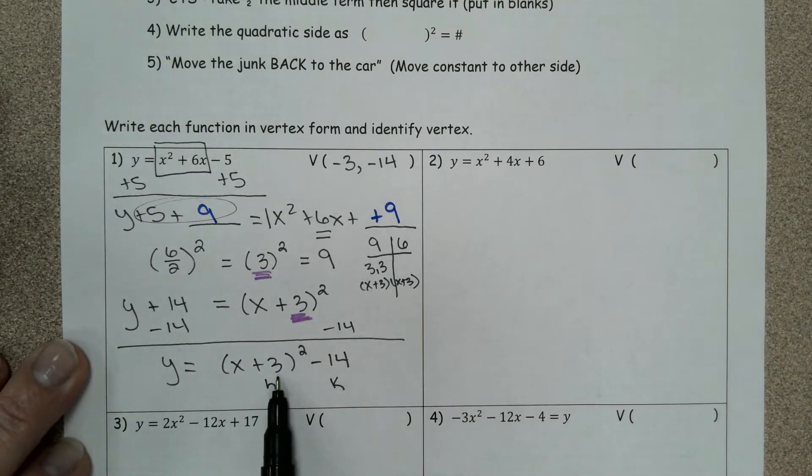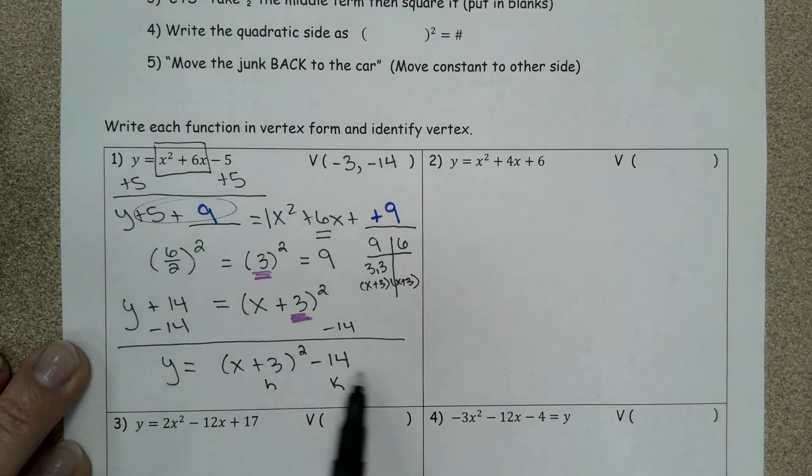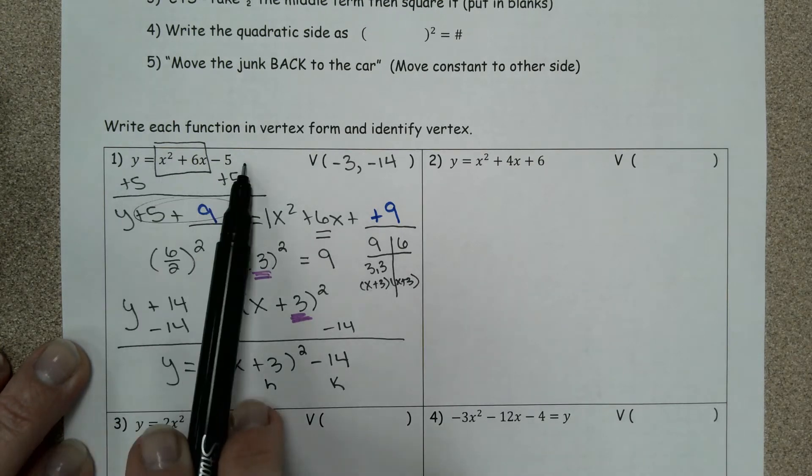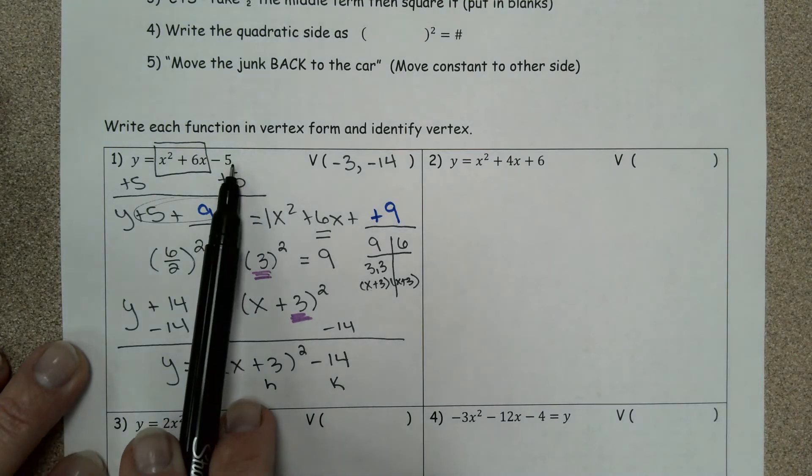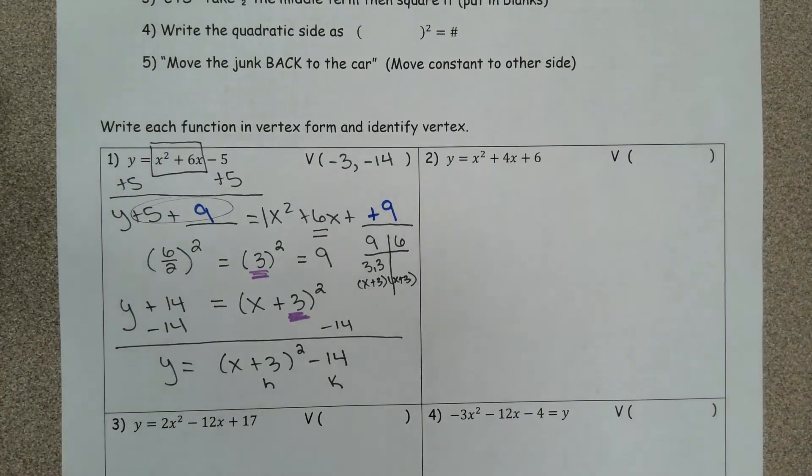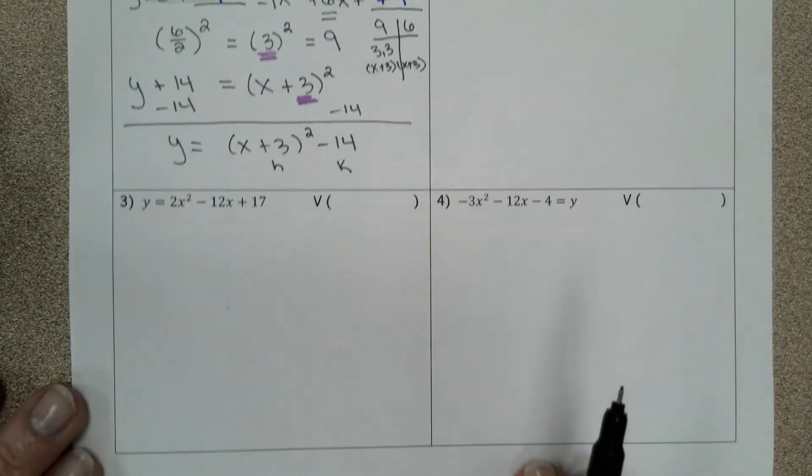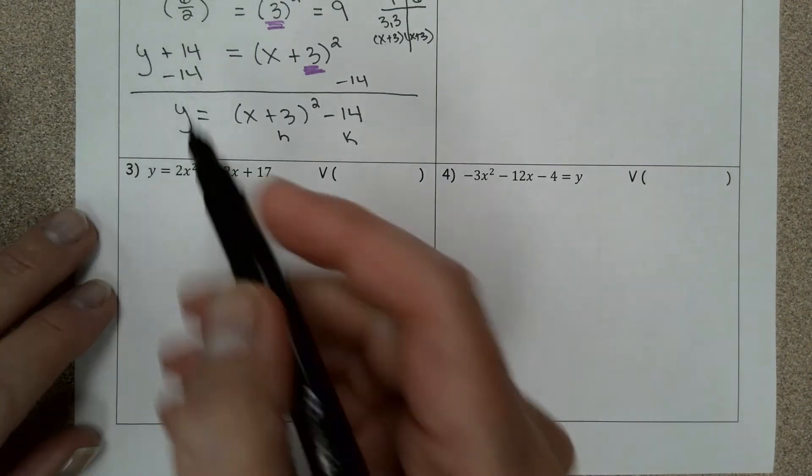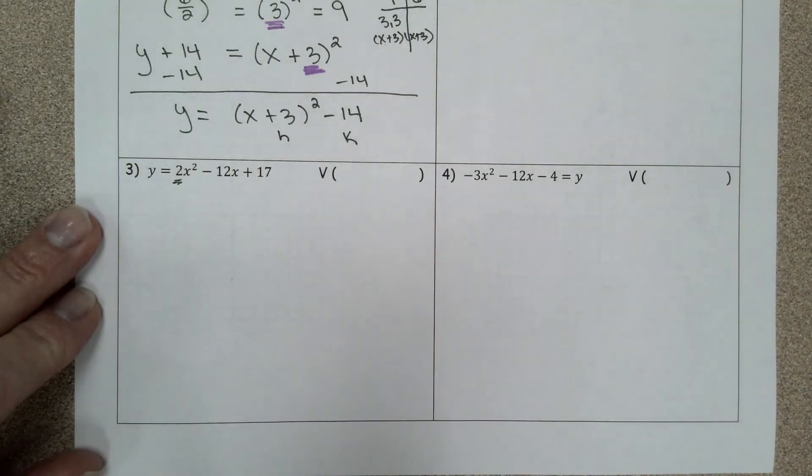Different versions give you different information. In vertex form you get the vertex out of it. In standard form, well I at least know what the y-intercept is. So different versions are helpful. I'm going to jump down to number three because it has a coefficient of two that we're going to have to work with.